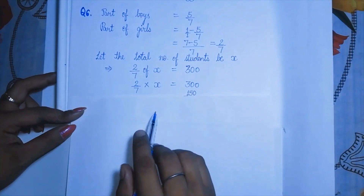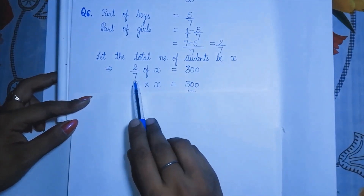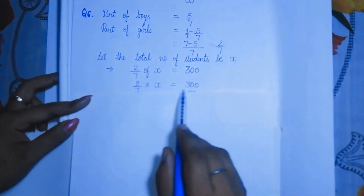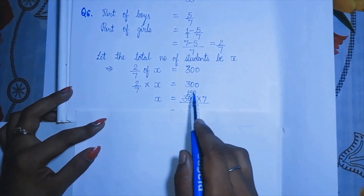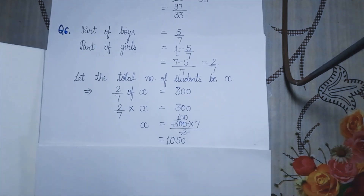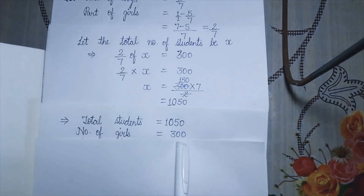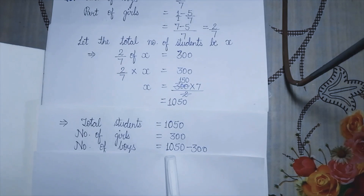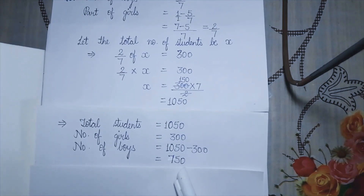Cross multiplying: x equals 300 times 7 divided by 2. Two can simplify 300 to give 150, so x equals 150 times 7, which is 1050. Total students are 1050. Then the number of boys equals total students minus number of girls: 1050 minus 300 equals 750. So there are 750 boys in that class.